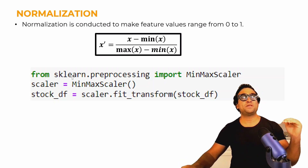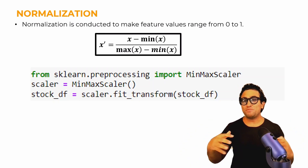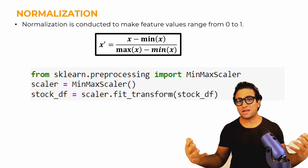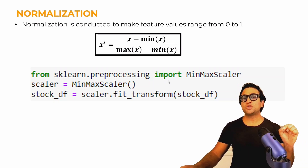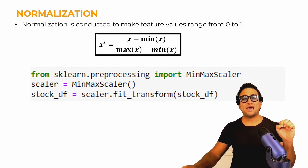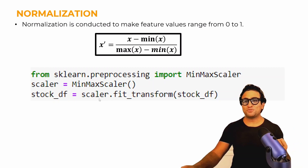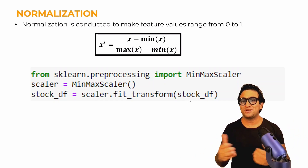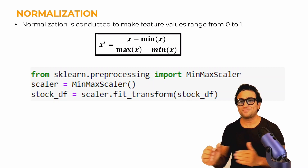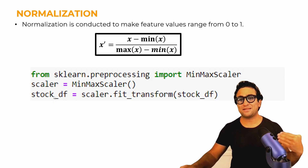Here are the three lines of code to perform what we call MinMaxScaler, which is simply normalization. First, from sklearn.preprocessing, import MinMaxScaler. Then instantiate an object: scaler = MinMaxScaler(). Then grab that object, apply the fit_transform method on it, pass it the data — stock_df (which stands for data frame) — and that generates the normalized output, overriding the original data.